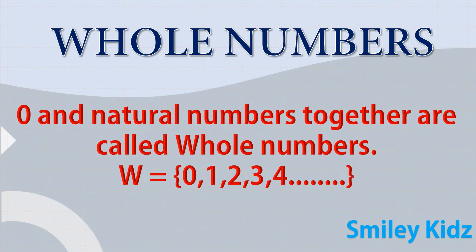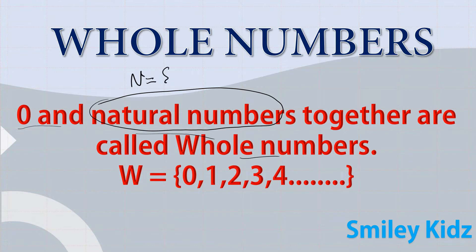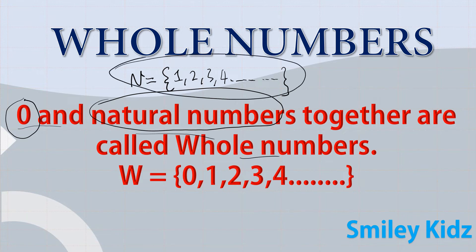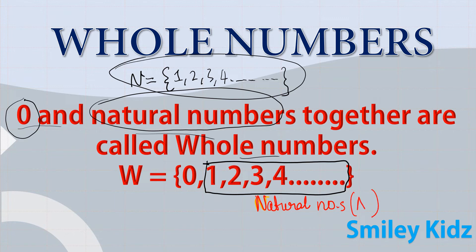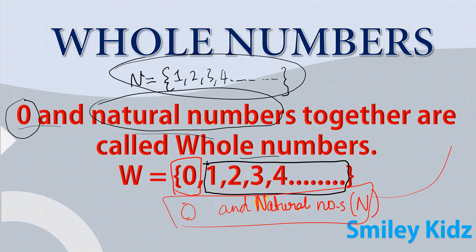Next, whole numbers. Zero and natural numbers together are called whole numbers. Natural numbers start from one and go until infinity. Adding zero to that collection forms whole numbers — so zero and all natural numbers together are whole numbers. Whole numbers are denoted by the letter W.